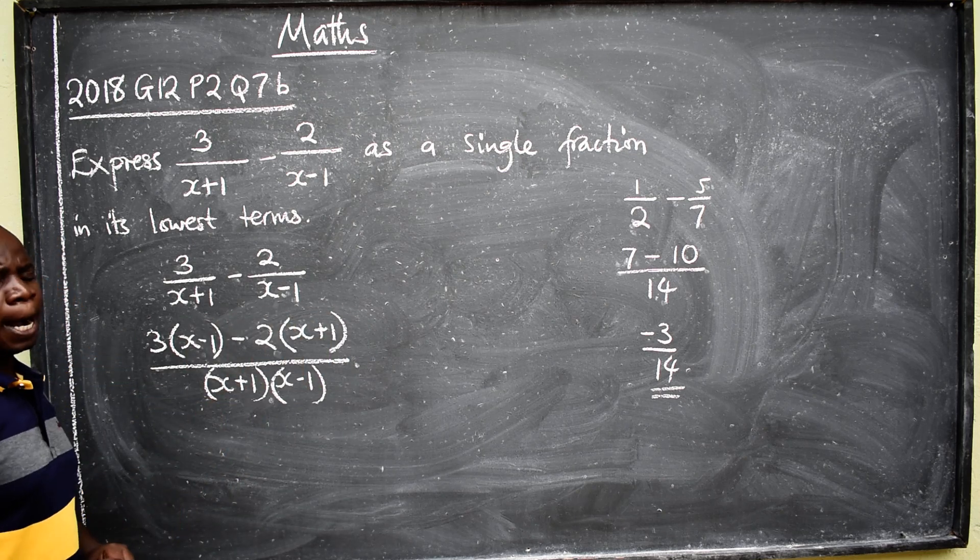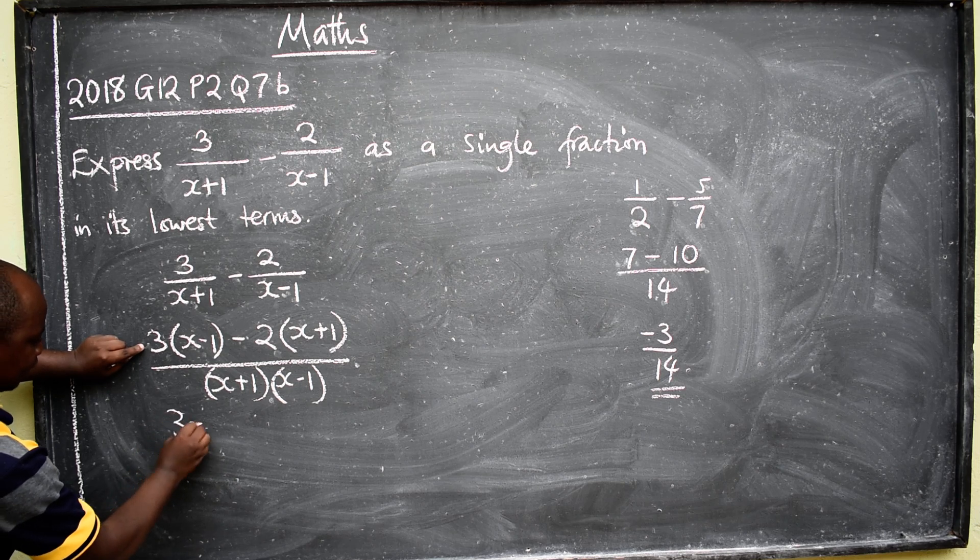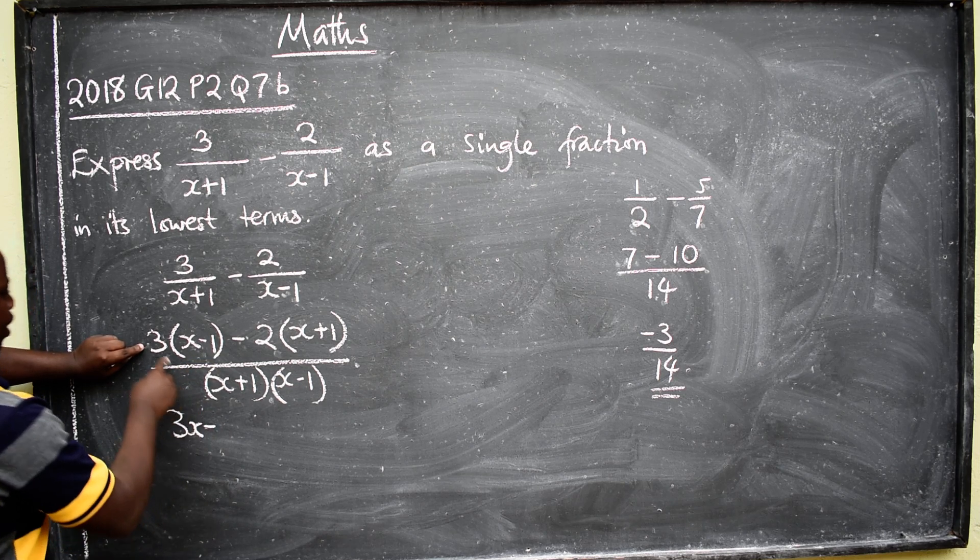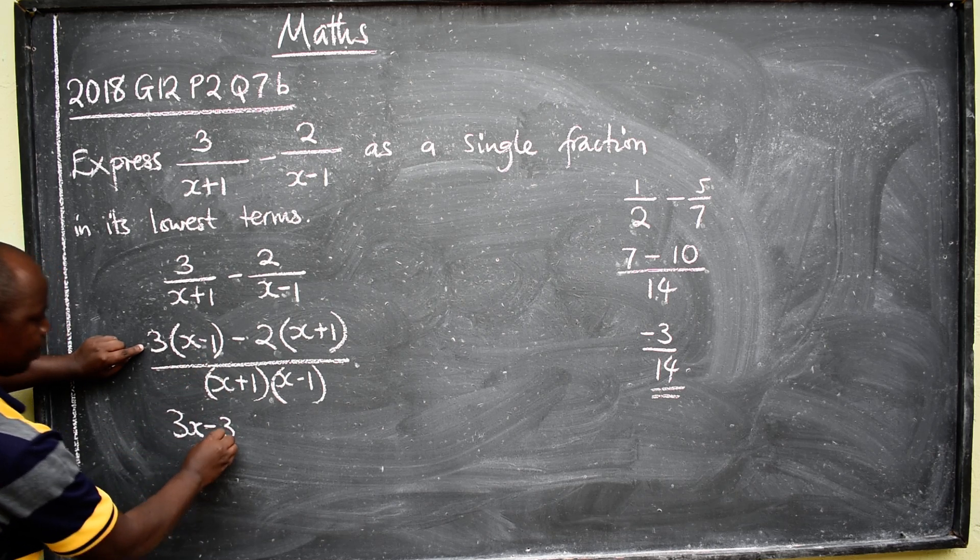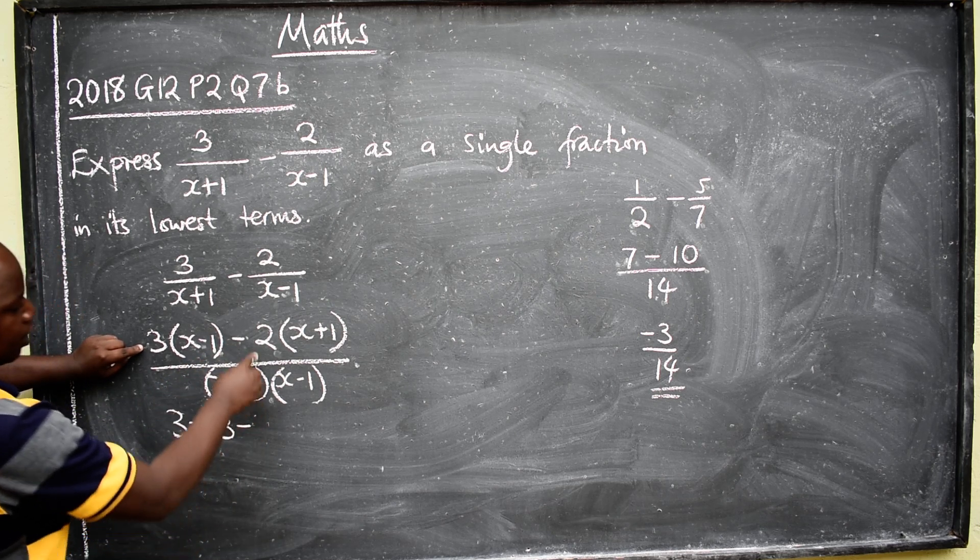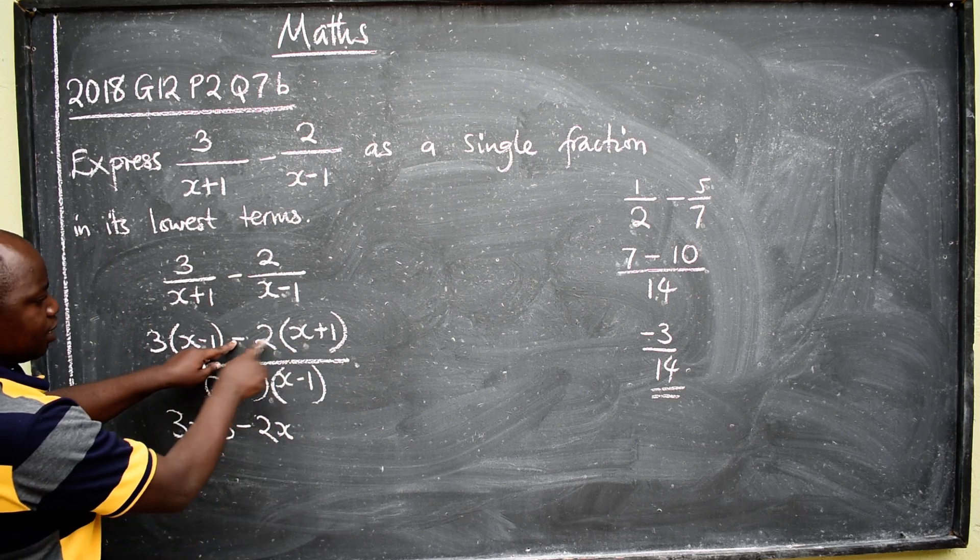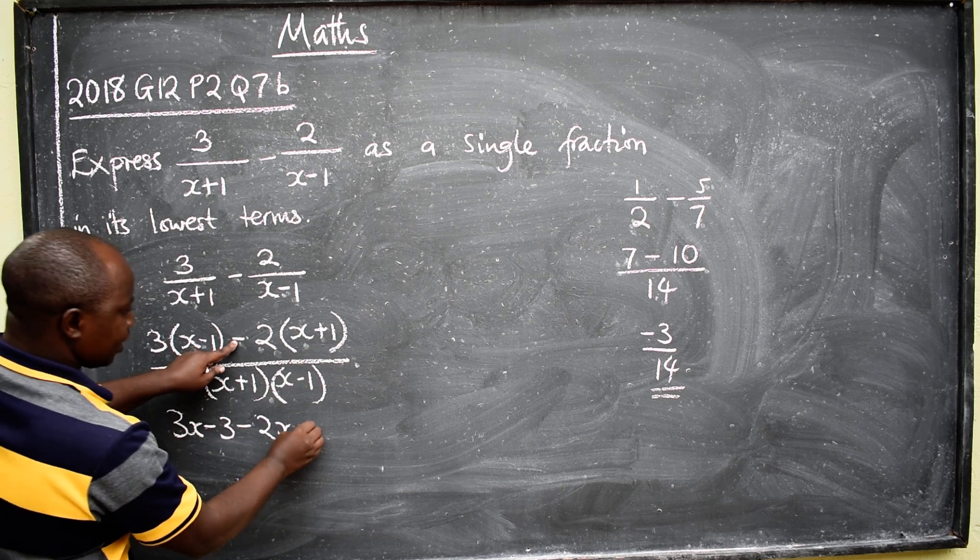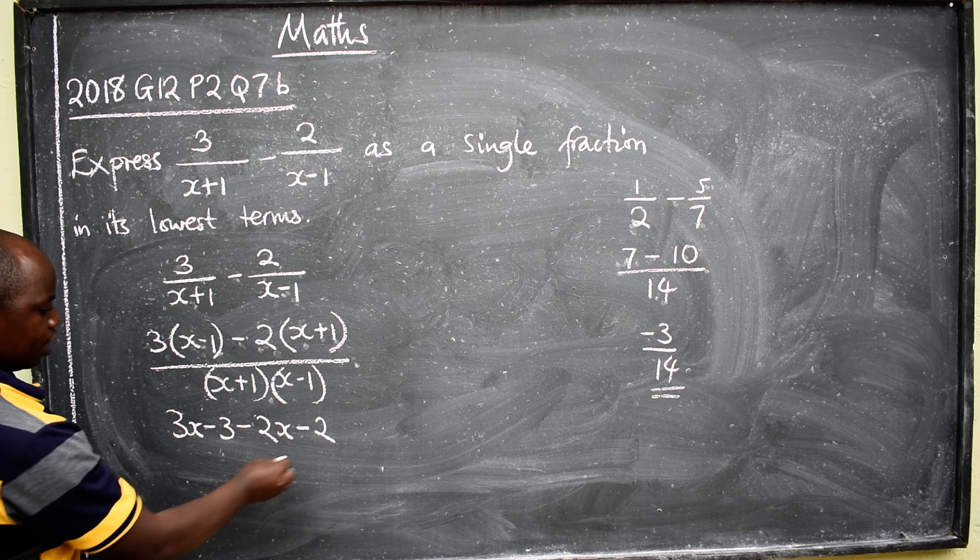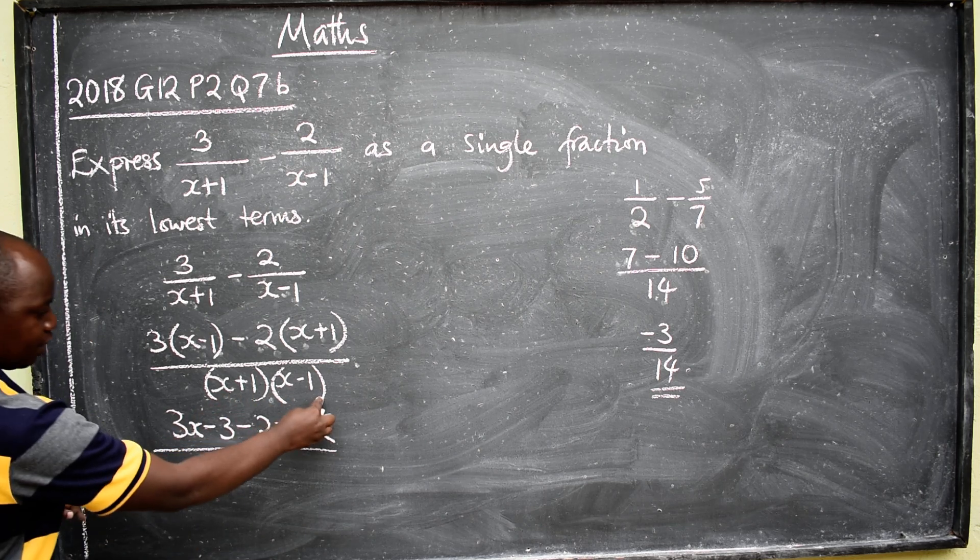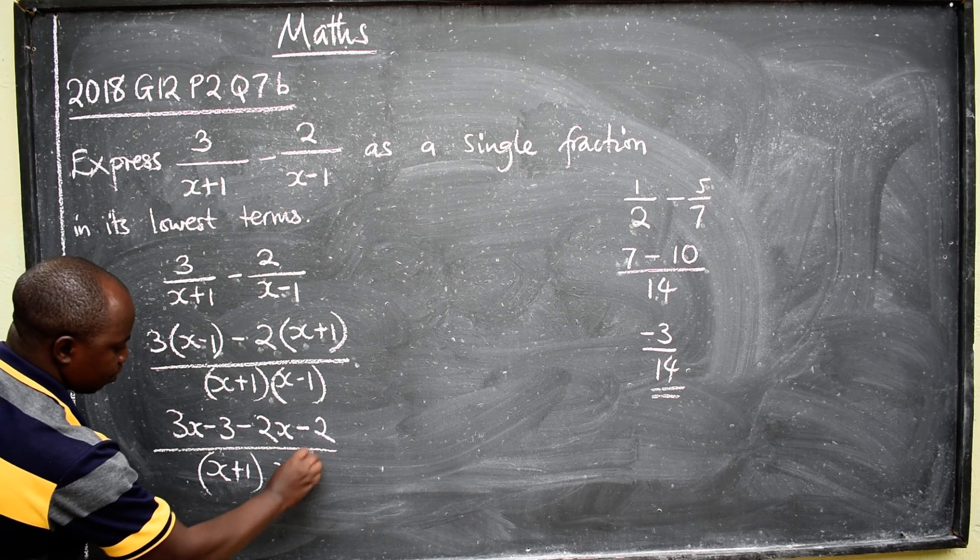3 times x is 3x minus 3 times 1 will give us 3 minus 2 times x will give us 2x. Negative and positive will give us negative. 2 times 1 will be 2. Then everything over this denominator, which is x plus 1, then x minus 1.